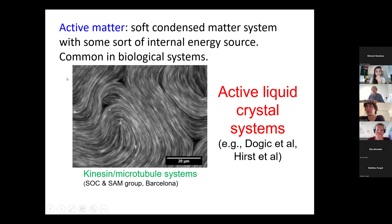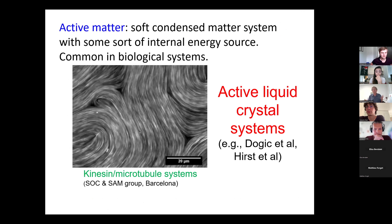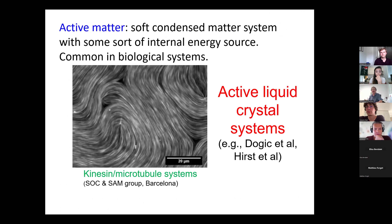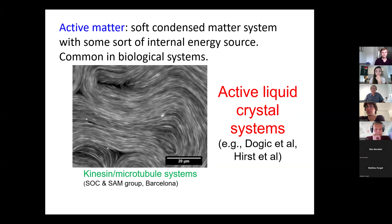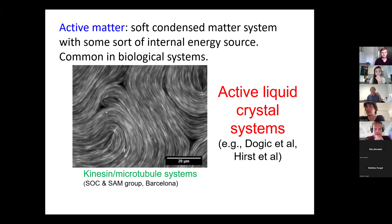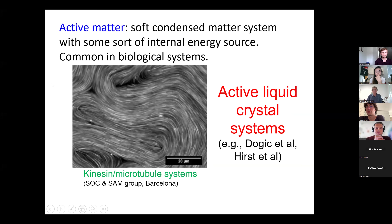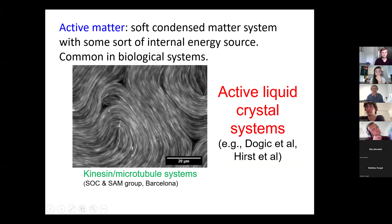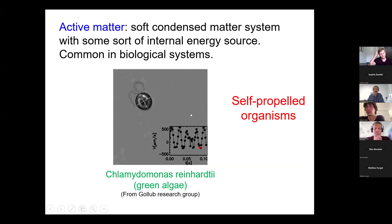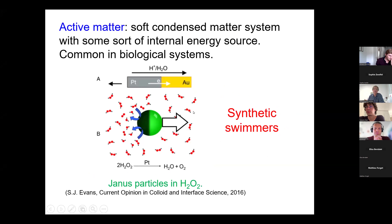I want to start off with some background on what we mean by active matter or active systems. Generally, the condensed matter community defines active matter as a system with some sort of internal energy source. There are lots of studies on active liquid crystals and kinesin and microtubules. Of course, self-propelled organisms are an example of an active matter system. You can talk about synthetic swimmers like Janus particles, or these Quincke rollers.